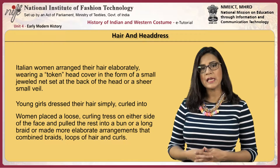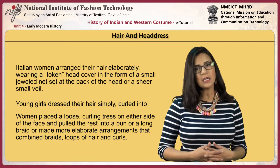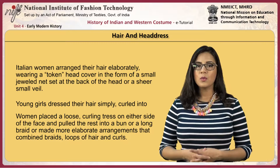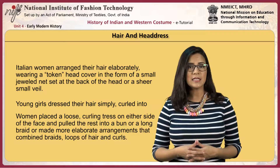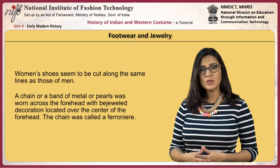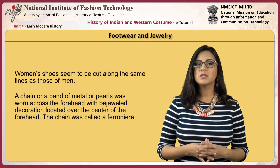Italian women arranged their hair elaborately, wearing a token head cover in the form of a small jeweled net set at the back of the head or a sheer small veil. Young girls dressed their hair simply, curled into long dresses. Women placed a loose curling tress on either side of the face and pulled the rest into a bun or a long braid, or made more elaborate arrangements that combined braids, loops of hair and curls. For footwear, women's shoes seemed to be cut along the same lines as those of men. Jewelry consisted of a chain or a band of metal or pearls worn across the forehead with a bejeweled decoration located over the center of the forehead. The chain was called a ferroniere.